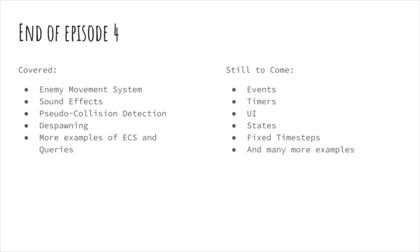That brings us to the end of episode 4. We've covered adding an enemy movement system, adding sound effects, doing pseudo-collision detection, and despawning our player. We've also looked at many more examples of ECS and queries. Still to come are Bevy events, using timers, UI, states, fixed time steps, and many more examples. Thank you all very much for watching. I hope you're enjoying this series — please let me know down in the comments how you're doing if you have any questions, and feel free to give me feedback on the pacing and the content. Thanks for watching.